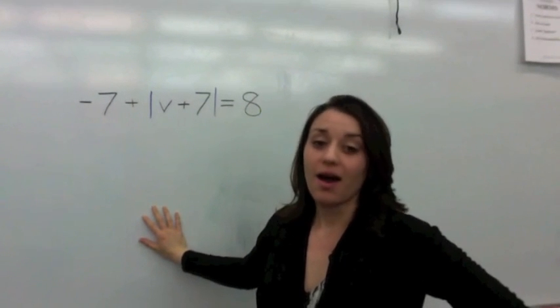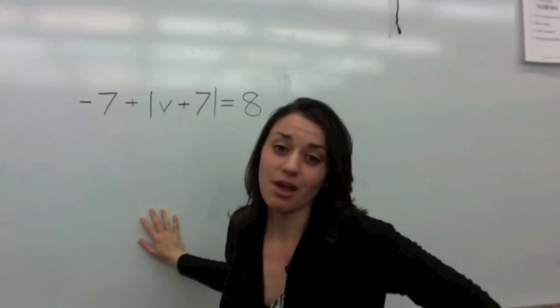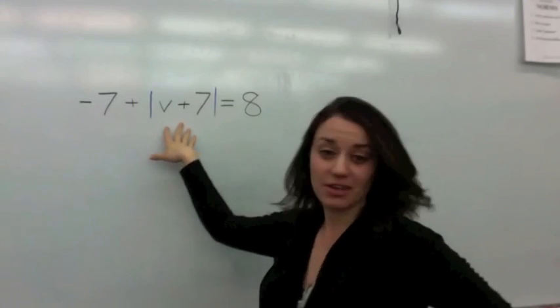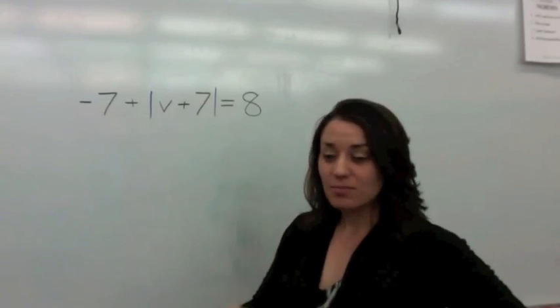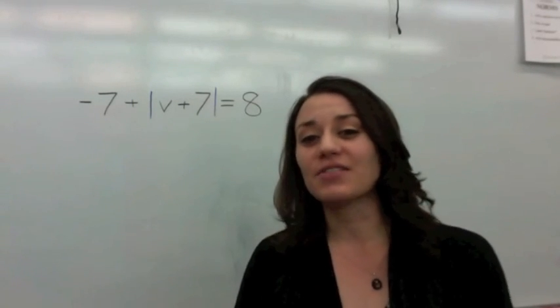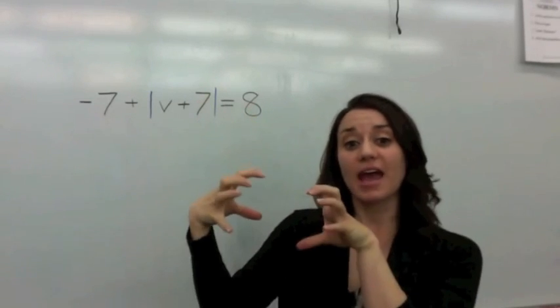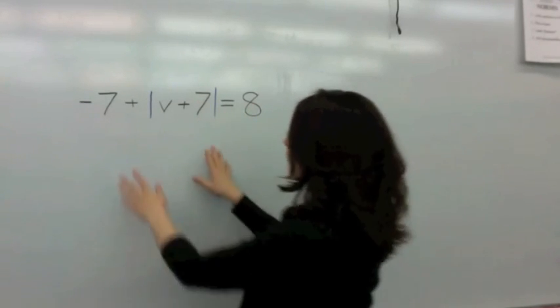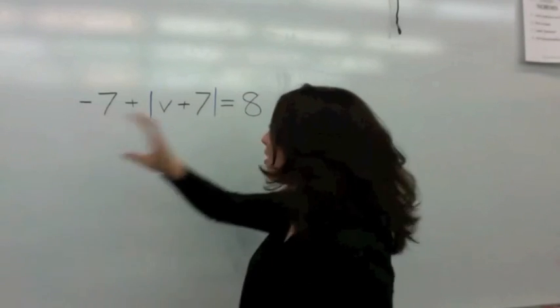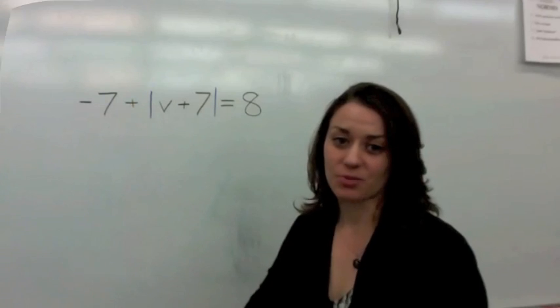Now unfortunately it did not work out with Mr. 10. So Miss Absolute Value decided to give Mr. Negative Seven a try. Now Mr. Negative Seven and Miss Absolute Value get together and when two things or people get together you are doing what to them? Adding. That's right.